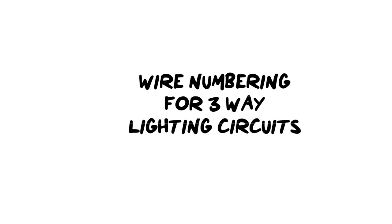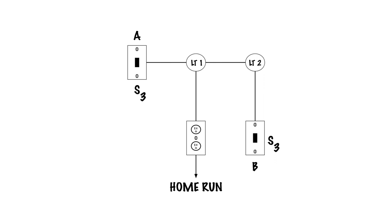In this video we're going to learn how to determine how many wires are going to a certain amount of devices in a three-way lighting circuit. Here's a situation where we have a three-way switch on one side of a room, a three-way switch on another side of the room. We have a receptacle which is going to provide our power for the lighting circuits, and we have two lights that are being controlled from two different locations with three-way switches.